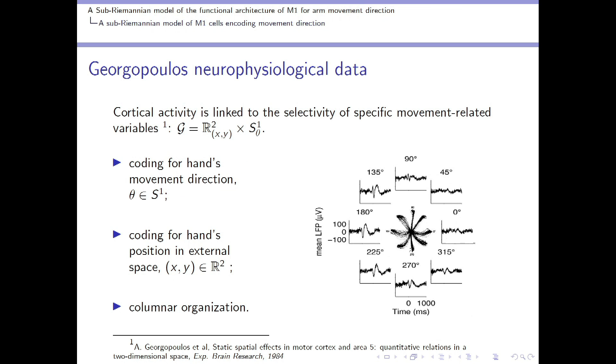For example, in a work of 1984, it was found that the cortical activity was linked to the selectivity of specific movement variables. On the right, it is displayed a typical experimental setting, where at the center there are displayed many trajectories of movements. These movements are also called central tasks, where at the outside there are represented the corresponding activity of a single neuron in response to the particular movement direction.